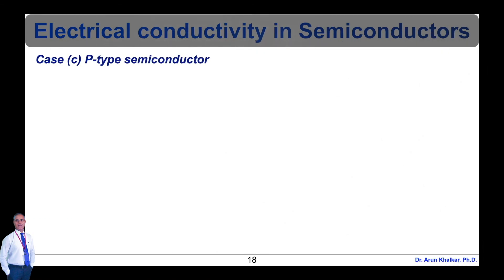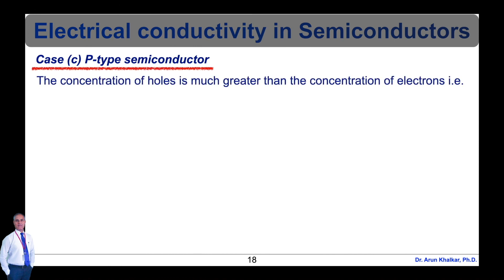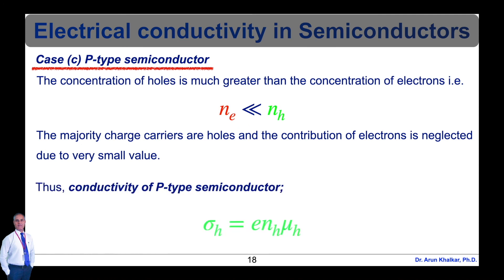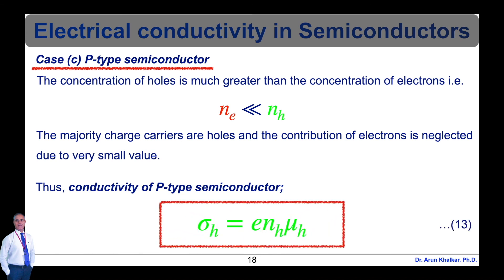Case C — P-type semiconductor: the concentration of holes is much greater than the concentration of electrons, so n_h >> n_e. The majority charge carriers are holes, and the concentration of electrons is neglected due to its very small value. Thus, the conductivity of a P-type semiconductor is σ_h equal to e·n_h·μ_h, which is equation number 13.